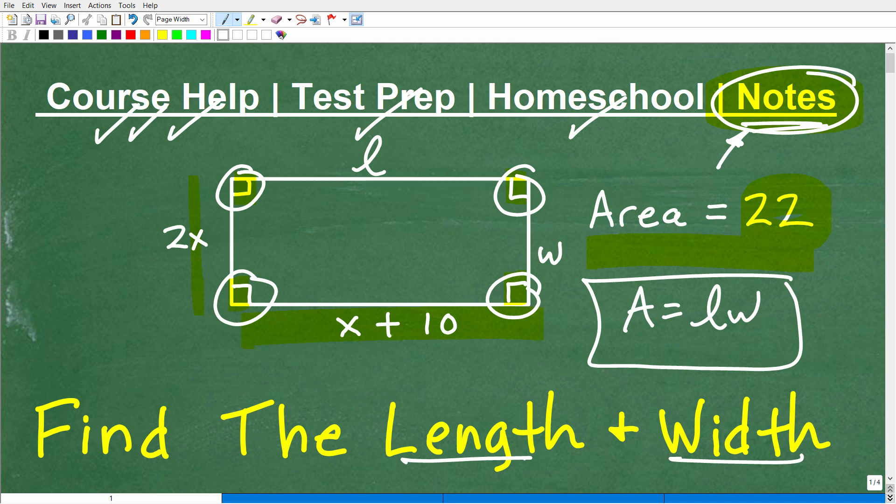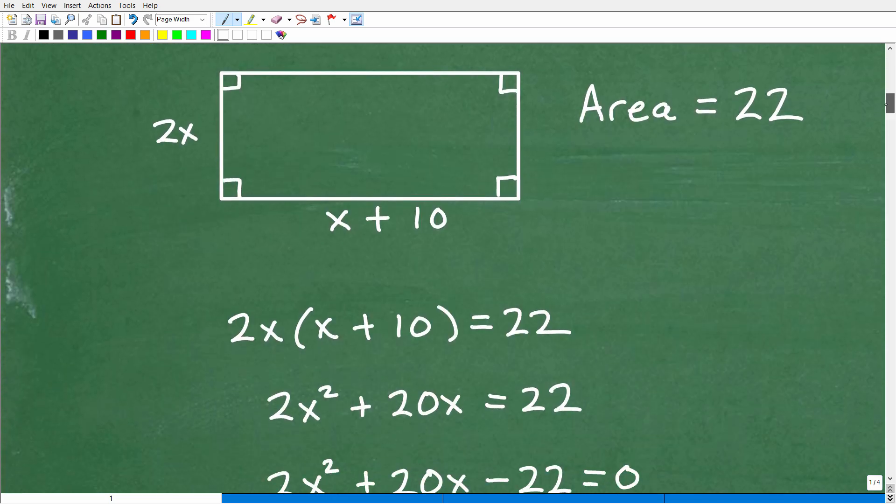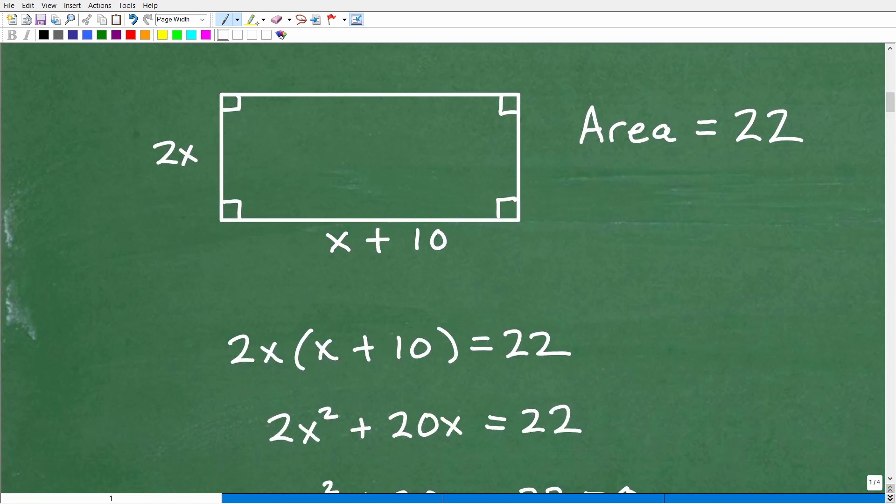Now what we have to have in order to solve this is some algebra skills. And that's where this is going to get really exciting. So we know that the area is equal to 22 units squared. So here we have the length, and here we have the width. So we know that the length times the width is equal to the area. So let's just go ahead and multiply these two together. Okay, so we have 2x times x plus 10.